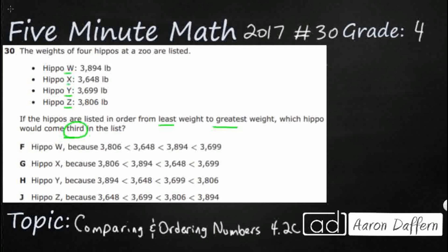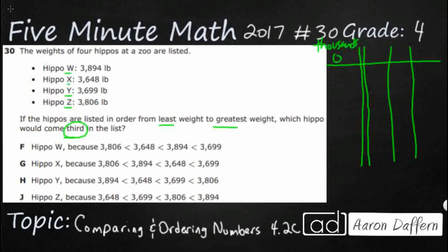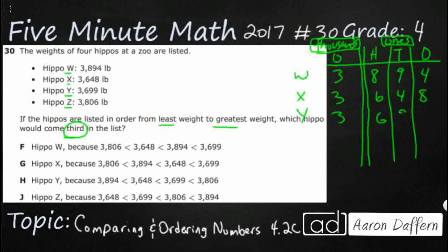Let's start with a place value chart. I'm going to put a double line here to separate my ones period from my thousands period. So this is my thousands, and over here we'll do my ones period: ones, tens, and hundreds. Starting with our numbers — Hippo W is three thousand eight hundred ninety-four, X is three thousand six hundred forty-eight, Y is three thousand six hundred ninety-nine, and Z is three thousand eight hundred six.